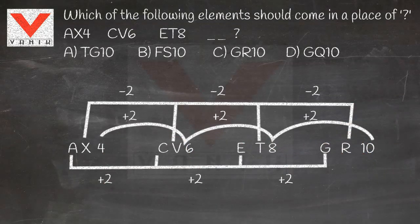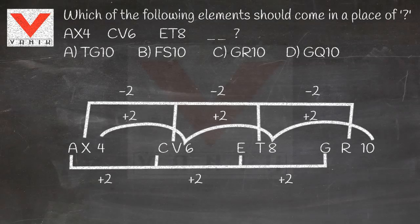In the second step: x-2=v, v-2=t, t-2=r. In the third step: 4+2=6, 6+2=8.